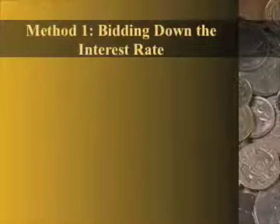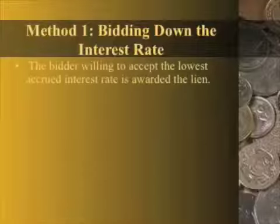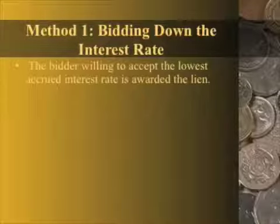The very first method is the bidding down the interest rate strategy or method. This is fairly common and you'll find this in states such as Arizona and Florida — areas that are popular with tax lien investors. It has its advantages and disadvantages. The overall idea is that the bidder willing to accept the lowest accrued interest rate is the one that's awarded the lien.